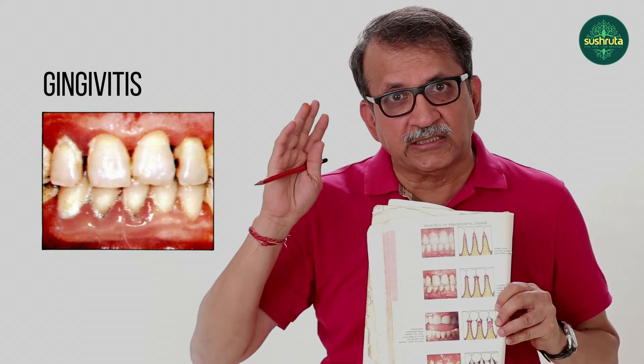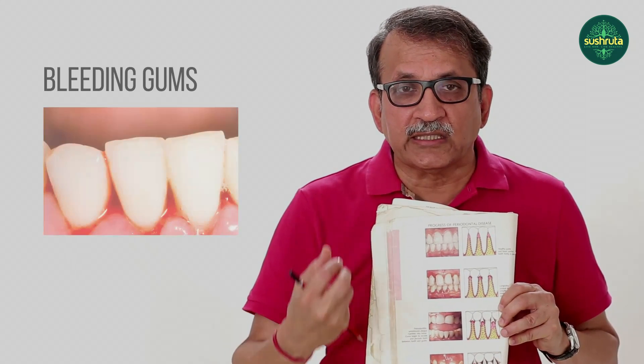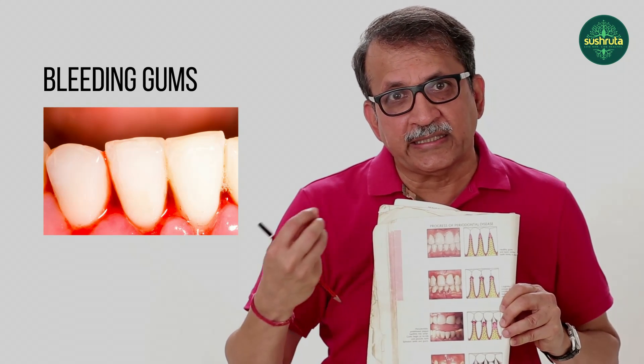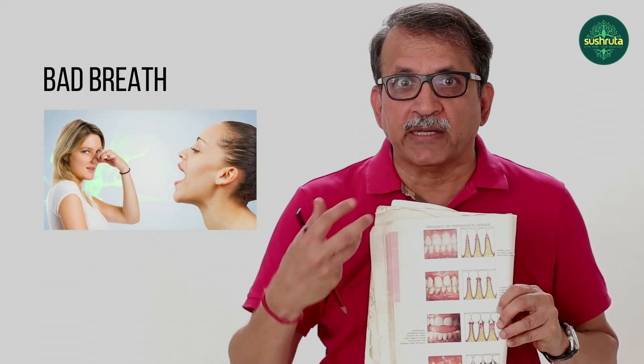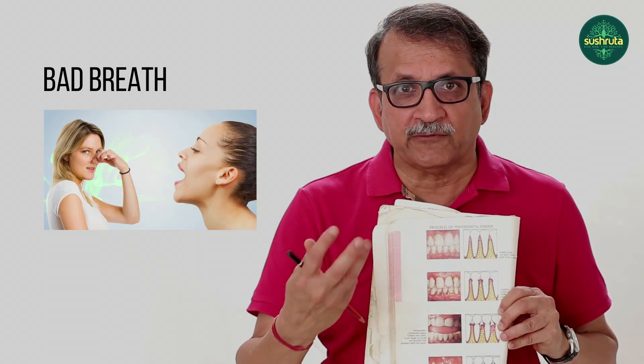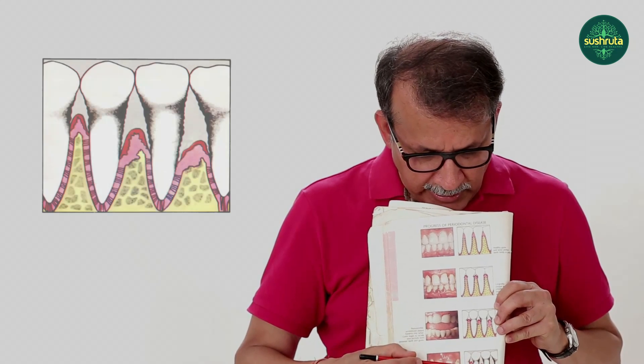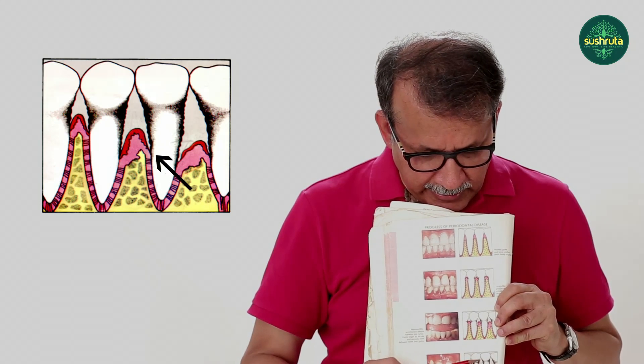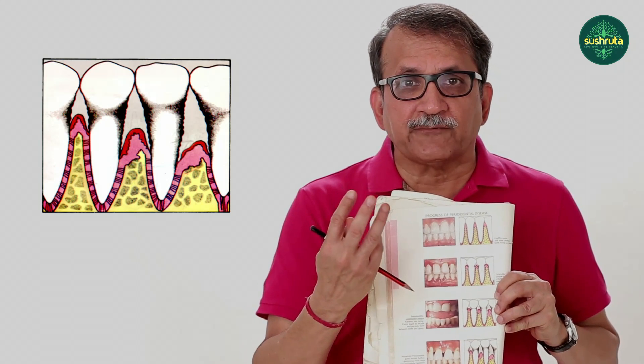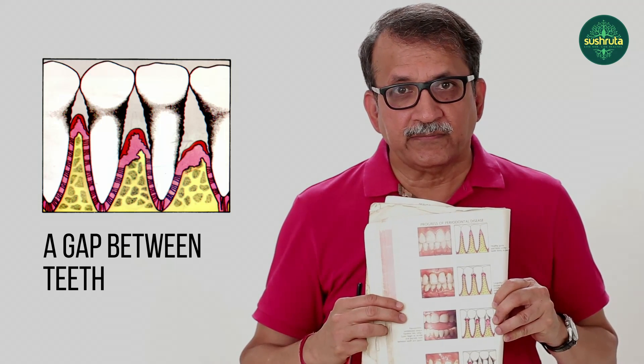Inflammation of the gums is gingivitis. When periodontitis takes place, your teeth start bleeding any time, or it smells because there is a lot of infection set in. It goes more inside, and then you can see the teeth start shifting — there is a gap between the teeth. You don't see that gap initially because it is filled with tartar. Your teeth are not mobile even if bone loss is there because the tartar is holding the teeth.